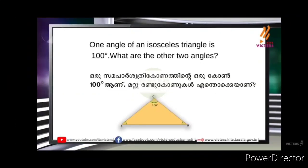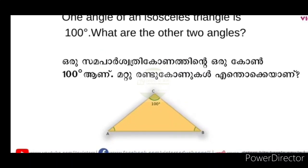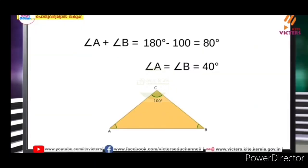Now I ask you one question. One angle of an isosceles triangle is 100 degrees. What are the other two angles? That means the two equal sides give two equal angles. The angle C is 100 degrees. One triangle has angles summing to 180 degrees. So 180 minus 100 equals 80 degrees. The angle C is 100 degrees, and angle A equals angle B equals 80 degrees — but wait, that means 80 is divided by 2, giving 40 each.